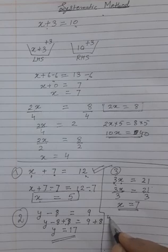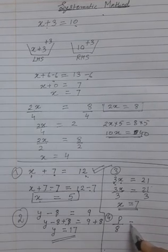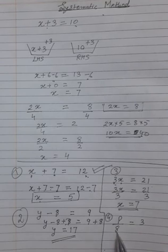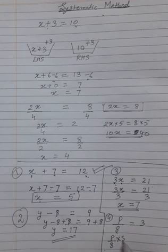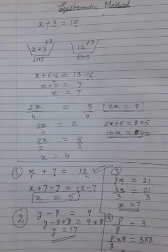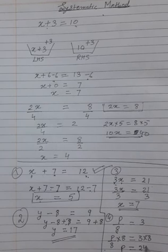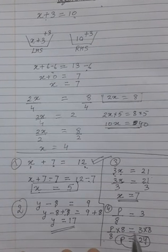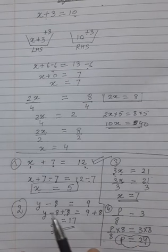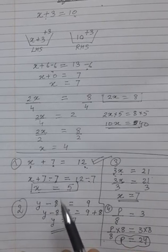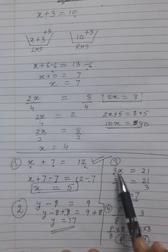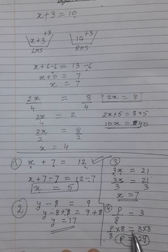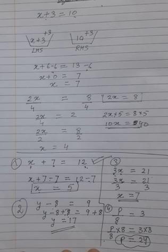One more example: suppose p divided by 8 equals 3. To find the value of p, I have to remove this 8. Since 8 is dividing p, we multiply both sides by 8 — just the opposite operation. So 8 and 8 cancel, leaving only p, and 3 times 8 is 24. So p equals 24 is the solution. To solve an equation by systematic method: if a number is added, subtract the same number; if subtracted, add the same number; if multiplied, divide by the same number; and if dividing the variable, multiply by the same number — always on both sides to keep the equation balanced.